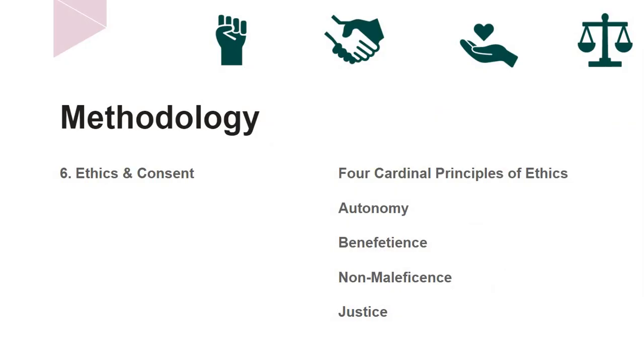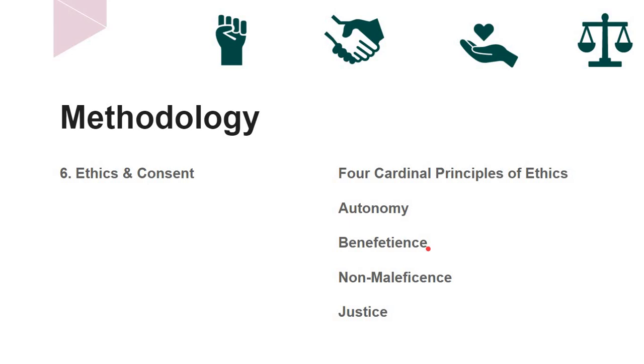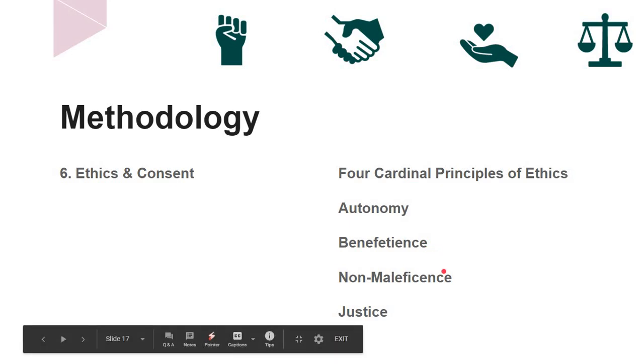Next on the list is the most important thing: ethics. Remember the committee which gives you approval to conduct the research is called institutional ethical committee. The four cardinal principles of ethics are autonomy, beneficence, non-maleficence and justice. Autonomy is respecting the right of the participant. Beneficence is doing good for the participant. Non-maleficence is not harming the participants. Justice is doing the right thing or the fair thing.